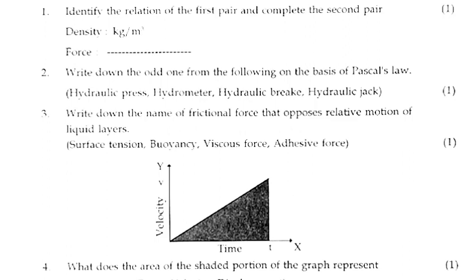Question 1: Identify the relation of the first pair and complete the second pair. Density: kilogram per meter cube, Force: dash. Answer: kilogram meter per second square. Question 2: Write down the odd one from the following on the basis of Pascal's law: hydraulic press, hydrometer, hydraulic brake, hydraulic jack. Answer: hydrometer.